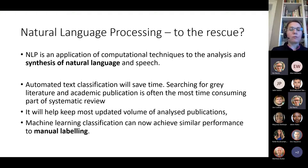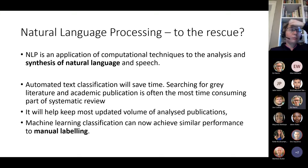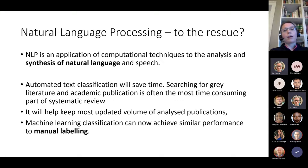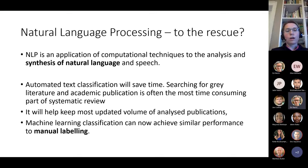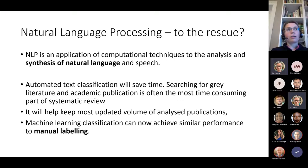Searching for so-called grey literature and academic publications is often the most time-consuming part of the systematic review. Grey literature — if you're not familiar with the term — is not academic publication. It is all the reports: branch reports, DEFRA reports, guidelines, and reports published by many organisations, which are also a valuable source of knowledge for knowledge synthesis. If we think of using NLP, since we would expect it to be much faster than manual screening, we can expect it to keep the most updated volume of publications analysed.